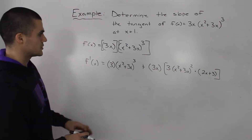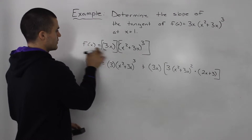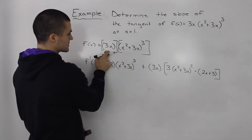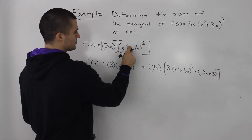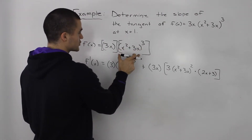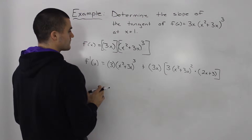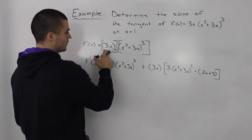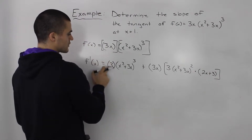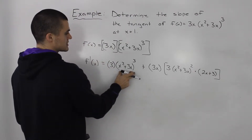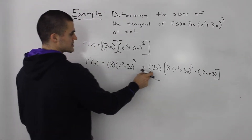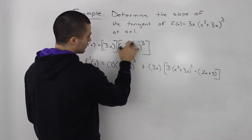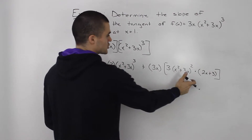Let me do a quick recap. f(x) is a product of two separate functions: 3x is one function, and (x² + 3x)³ is another. To take the derivative we use the product rule: the derivative of the first function times the second function, plus the first function times the derivative of the second function, where we apply the power of a function rule.